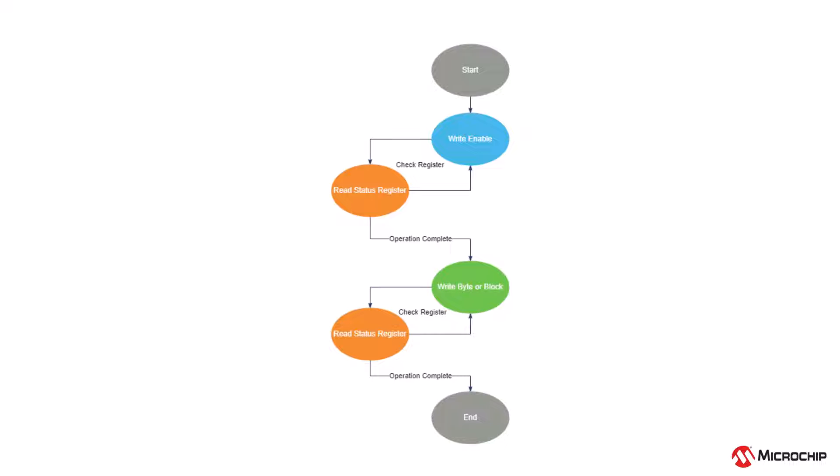After the write enable command has been sent, the EEPROM will need a small amount of time to work. During this time, the EEPROM status is tracked in the status register. Upon completion, the appropriate bit within the status register will be flipped, signaling the EEPROM is ready for the write to begin. The register may be polled for its status to begin the write immediately, or the user may bypass this polling by setting a small timer instead.